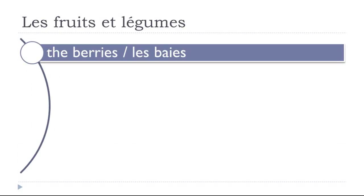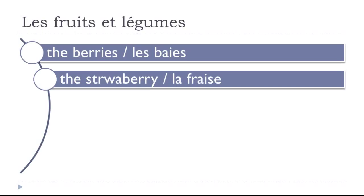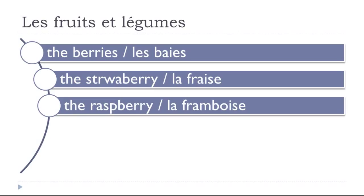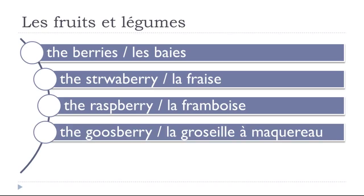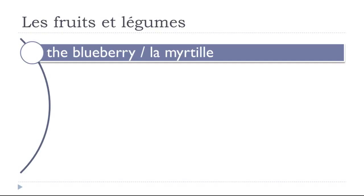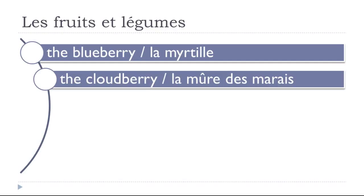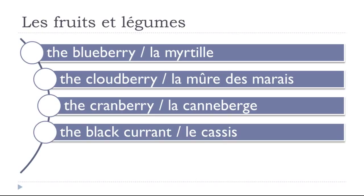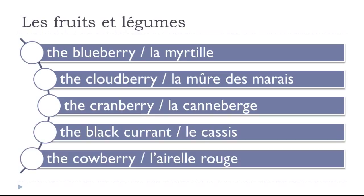Les baies — berries: la fraise (strawberry), la framboise (raspberry), la groseille à maquereau (gooseberry), la groseille rouge (redcurrant), la myrtille (blueberry), la mûre des marais (blackberry), la canneberge (cranberry), le cassis (blackcurrant), l'airelle rouge (lingonberry).